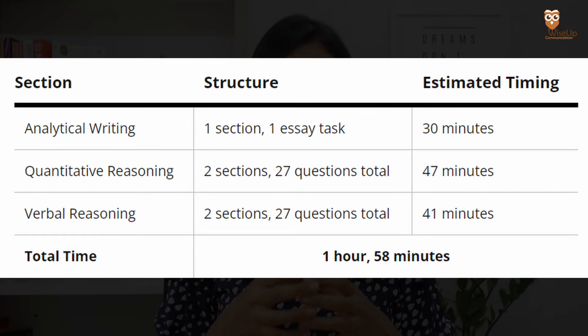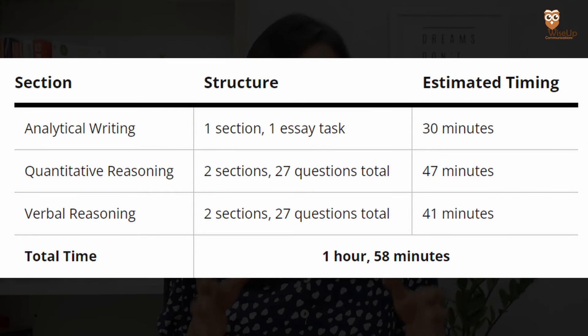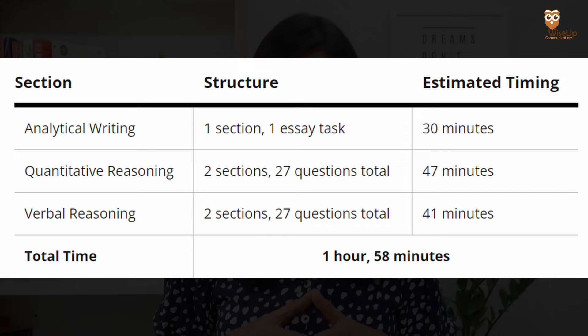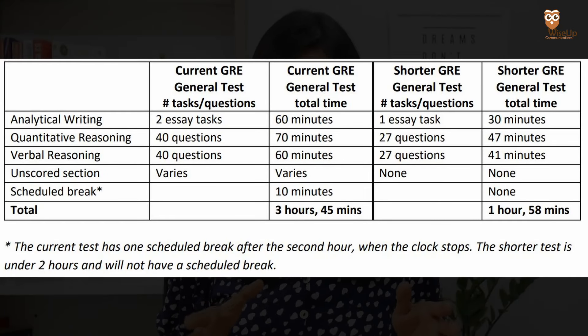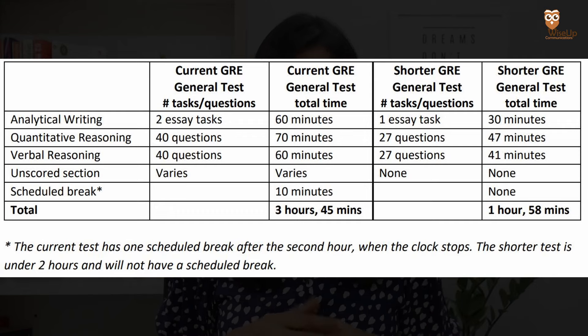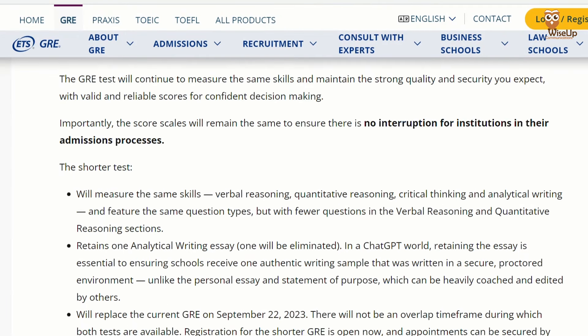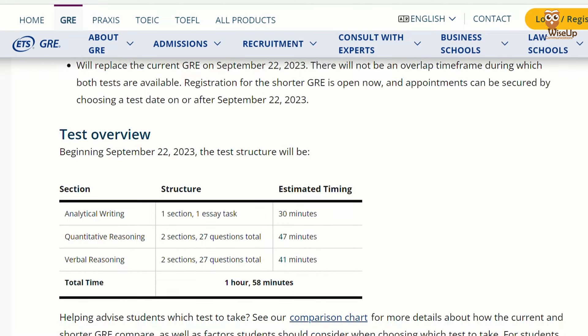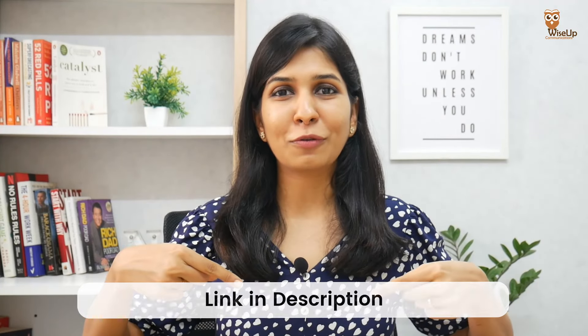To summarize, from 22nd September 2023, nearly 46 questions have been removed from the Quantitative and Verbal Reasoning sections, and one entire writing task has been removed, bringing the test time to less than two hours. Of course, if you need more details, you should always visit the official GRE website — I've linked it in the description below.